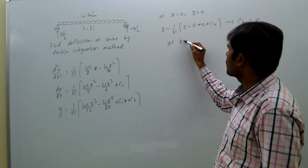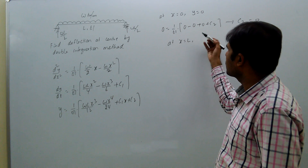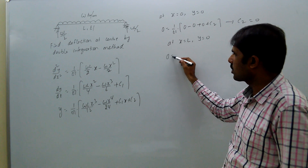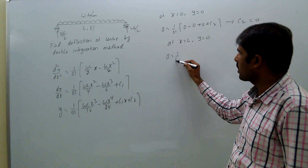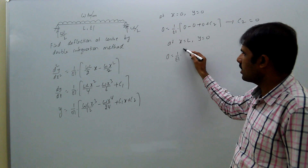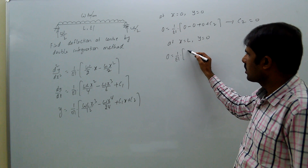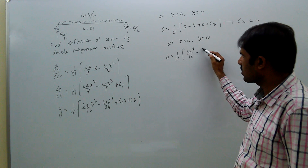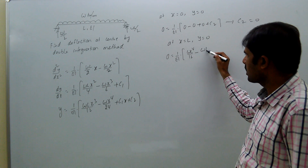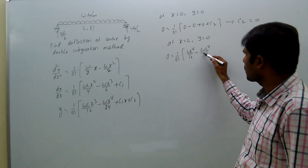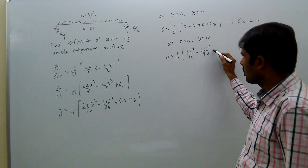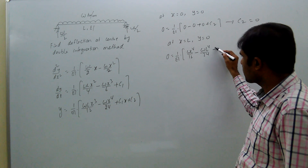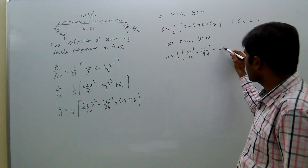At x equal to L, y equal to 0. That means 0 equal to 1 by EI into WL to the power 4 by 12 minus WL to the power 4 by 24 plus C1 L.